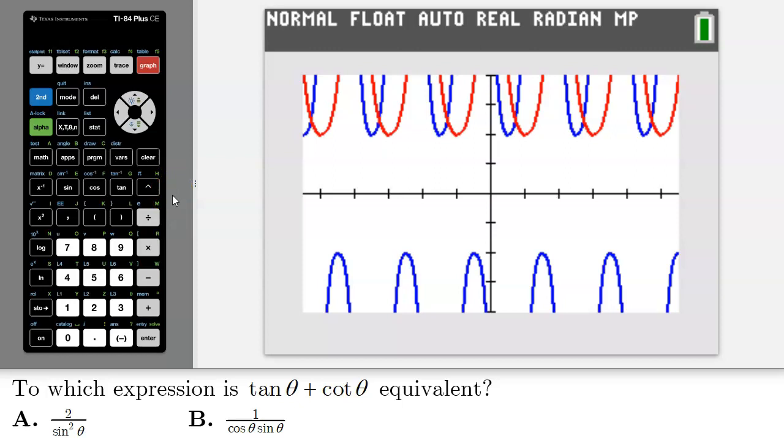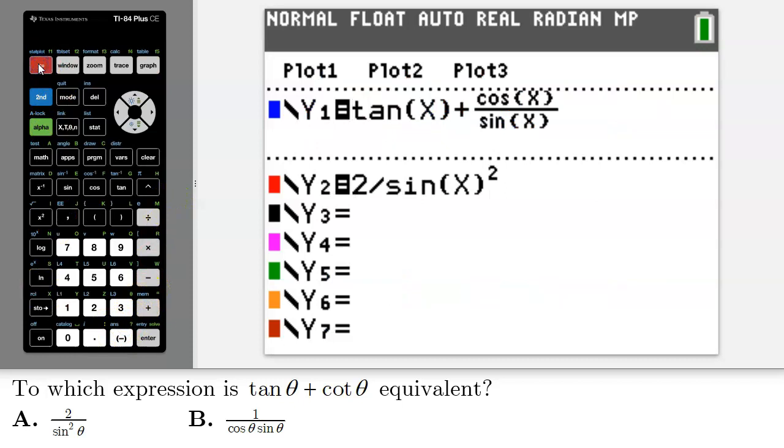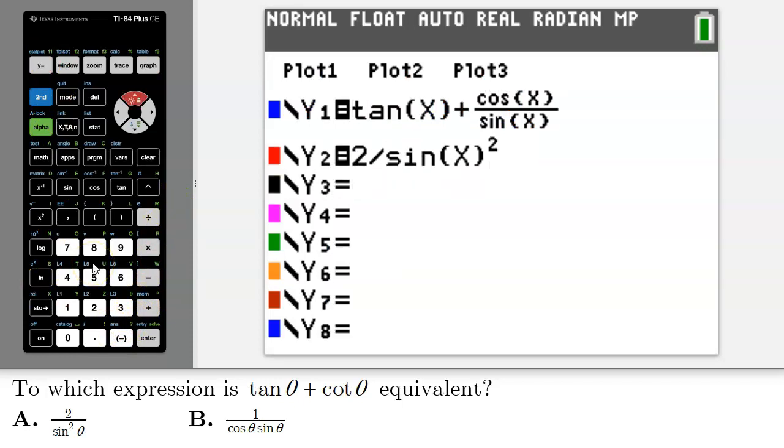That must mean B is our answer but let's just verify to be sure. We'll return to our y equals editor and in y3 I will enter 1 divided by cosine theta times sine theta.